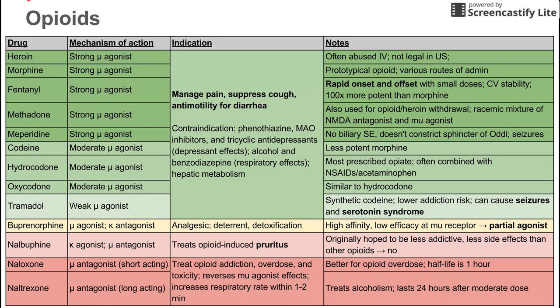Let's begin with heroin. Heroin is a strong mu agonist. Its indication, like many of the opioids, is to manage pain, suppress cough, and it's a diarrhea medication. Managing pain makes it an analgesic, and there are some contraindications for the use of heroin, along with all these other drugs in the green here.